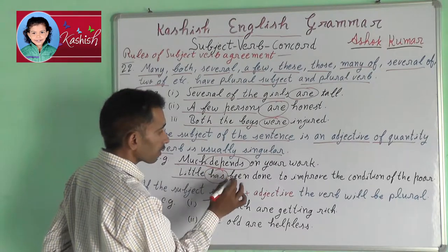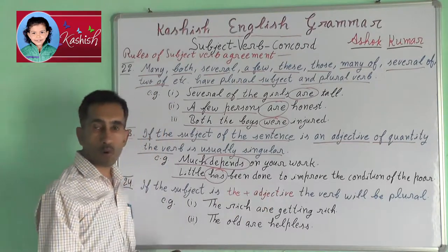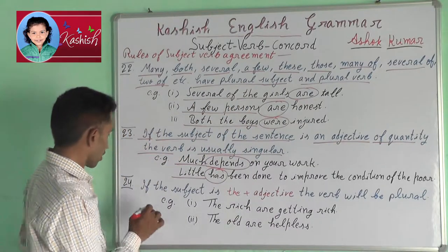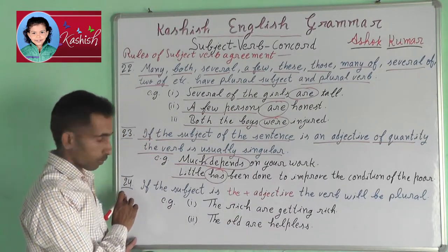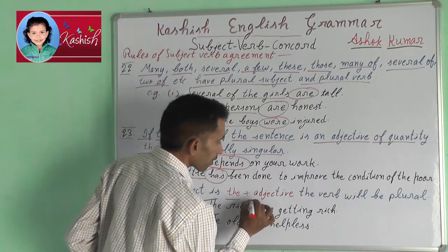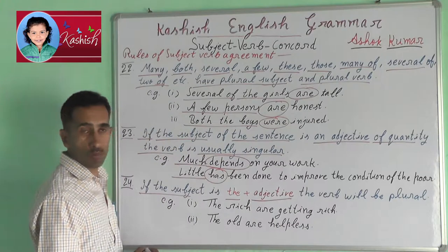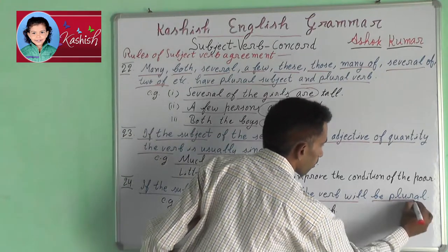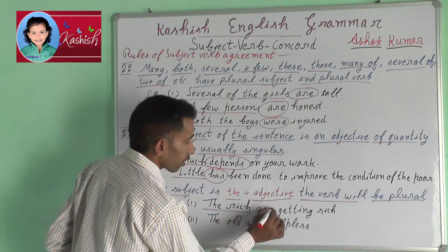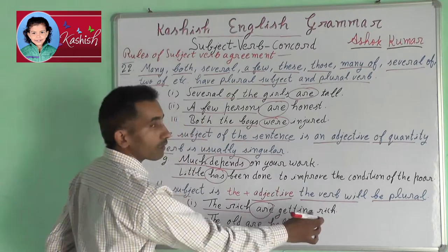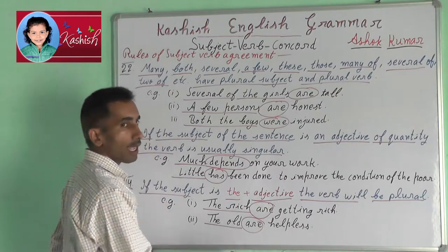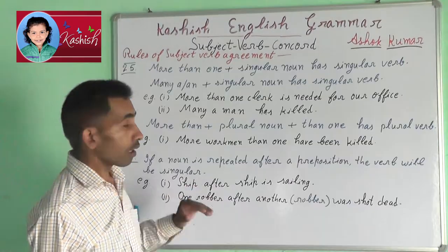Little has been done to improve the condition of the poor. Rule 24: If the subject of the sentence is an adjective, the verb will be plural. For example: the rich are getting rich. The old are helpless.